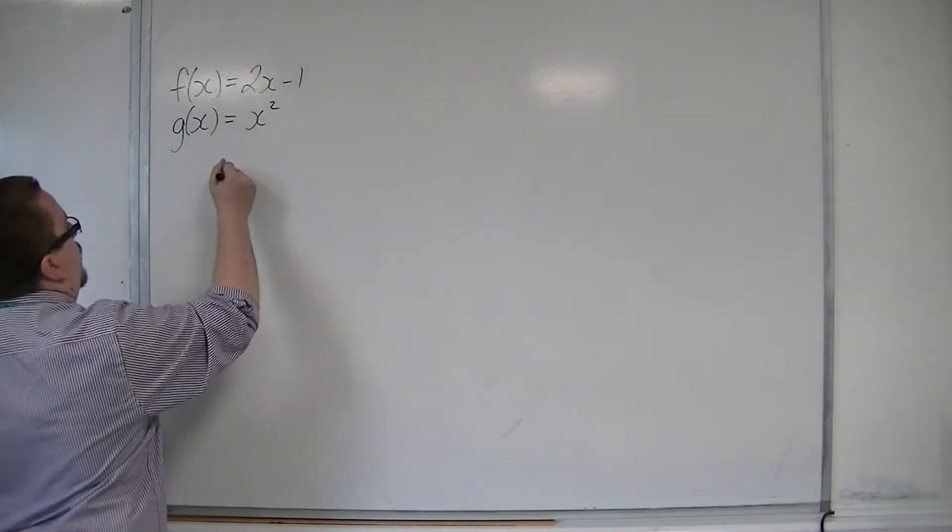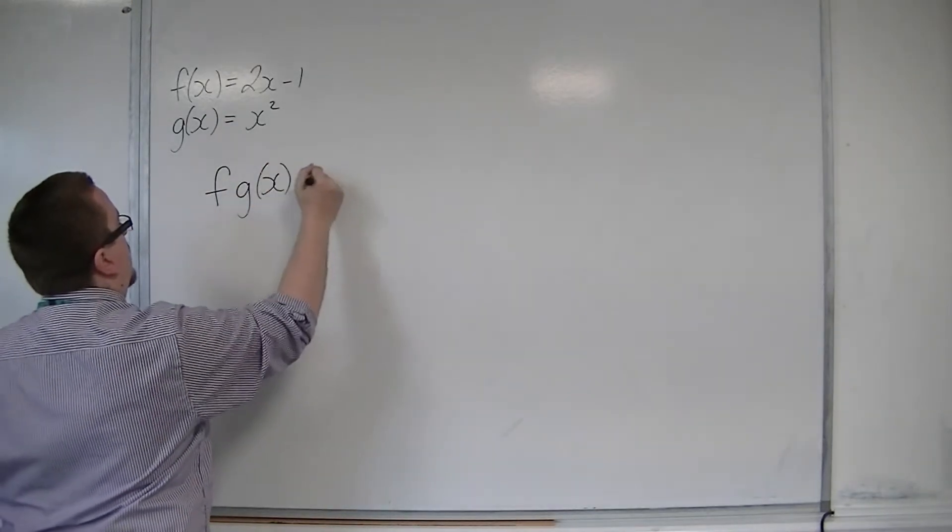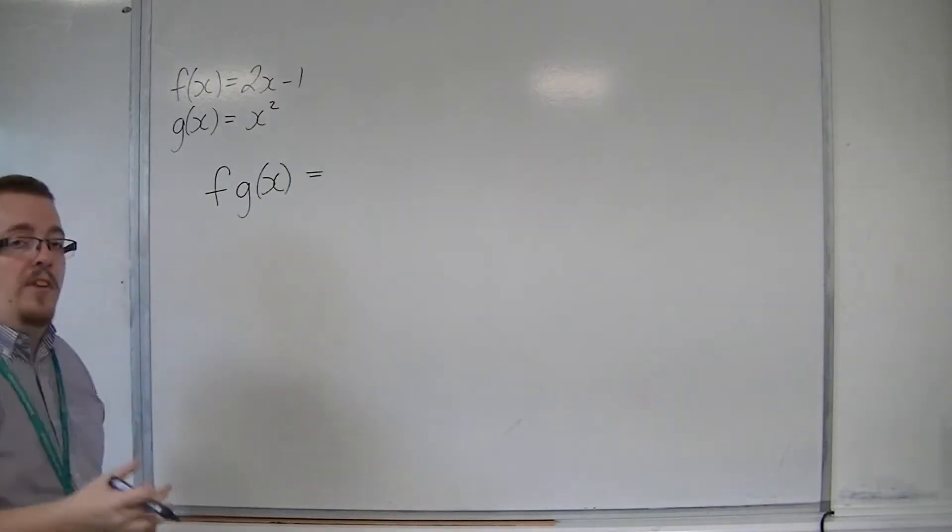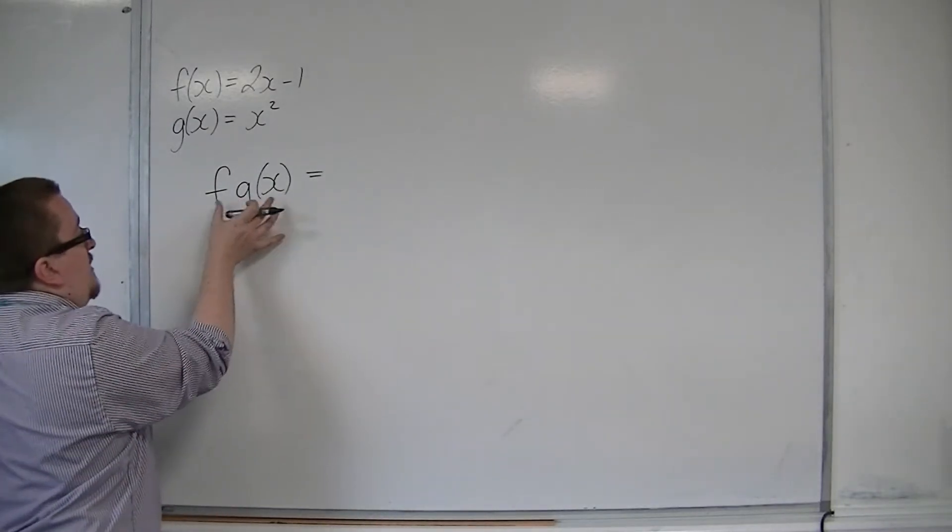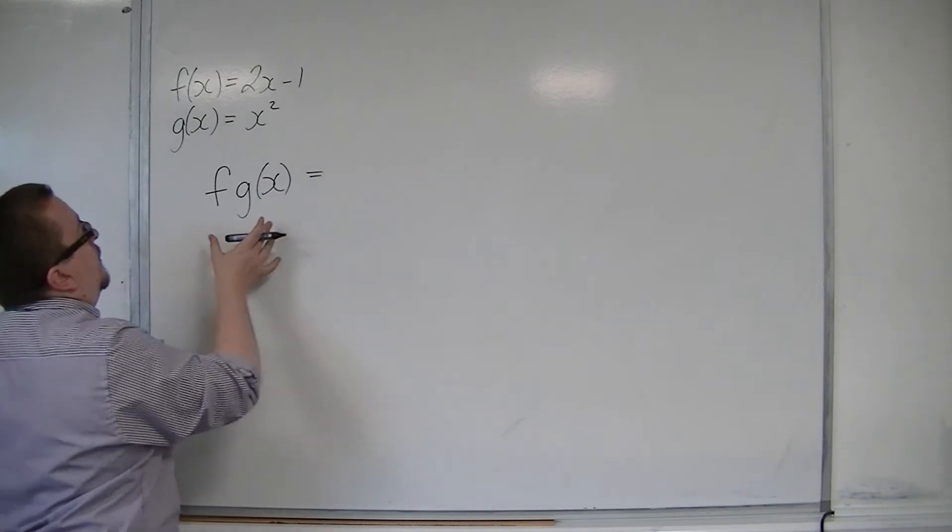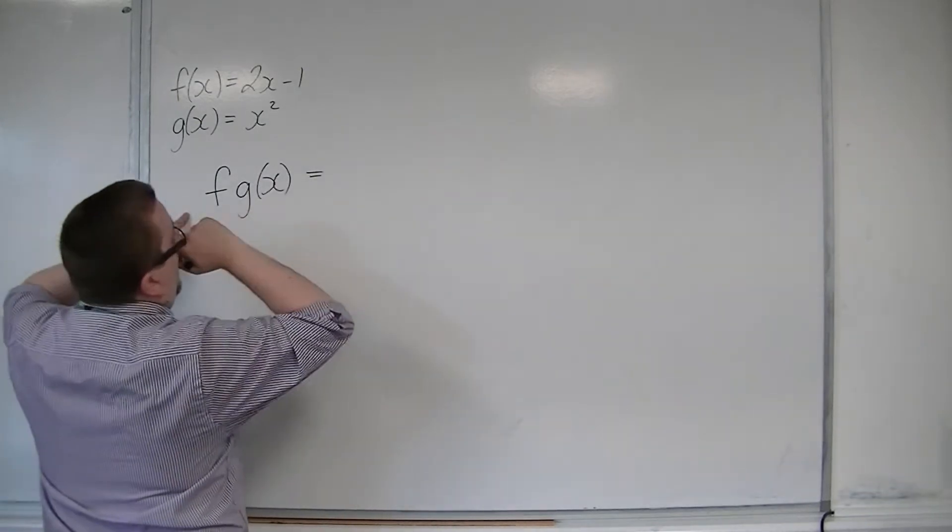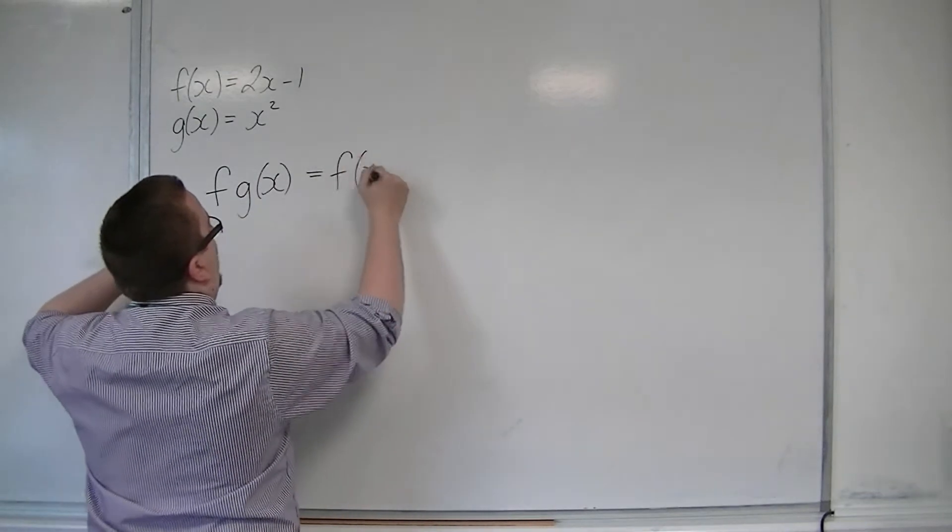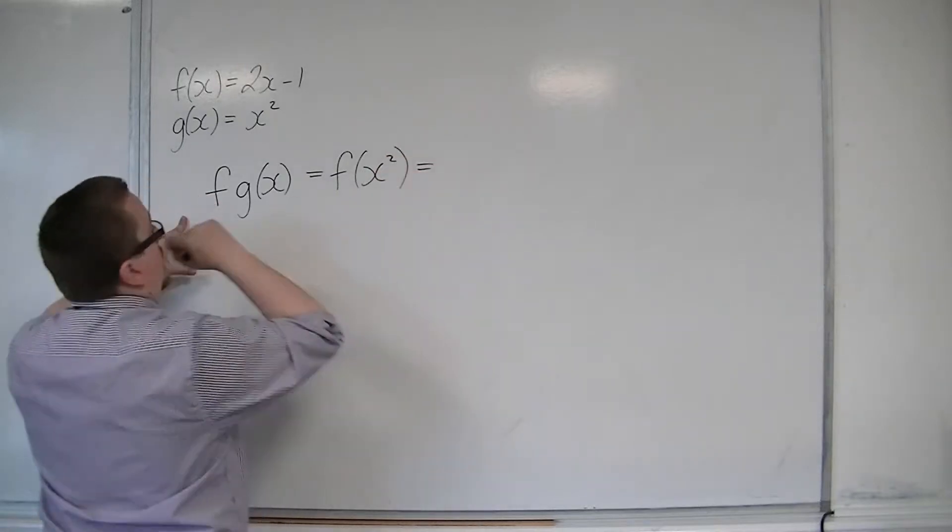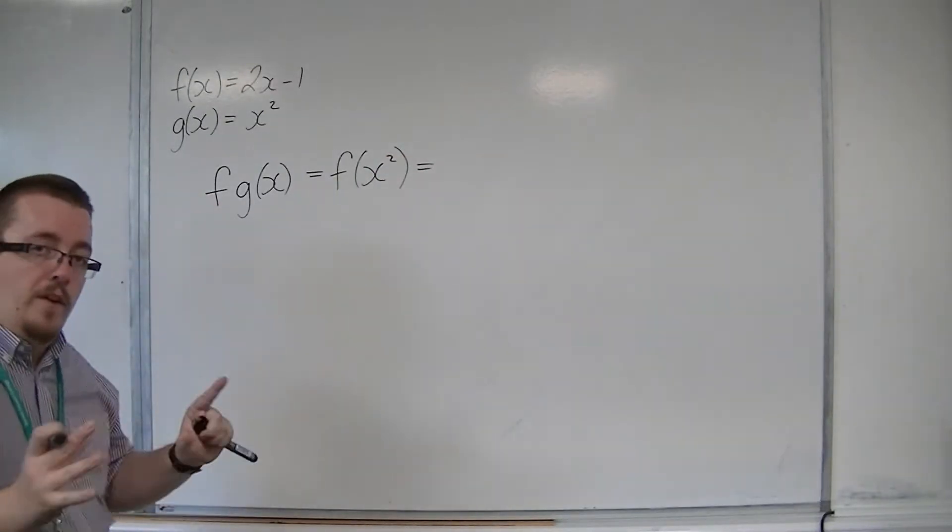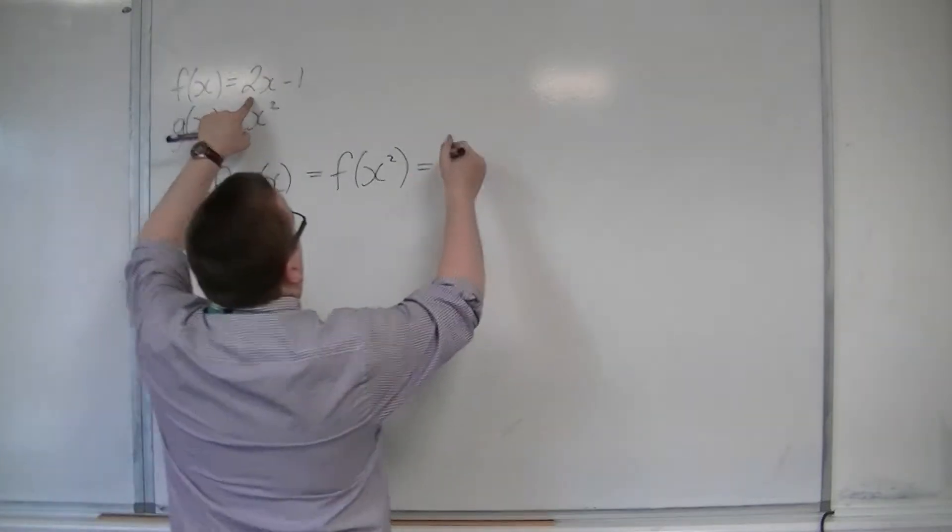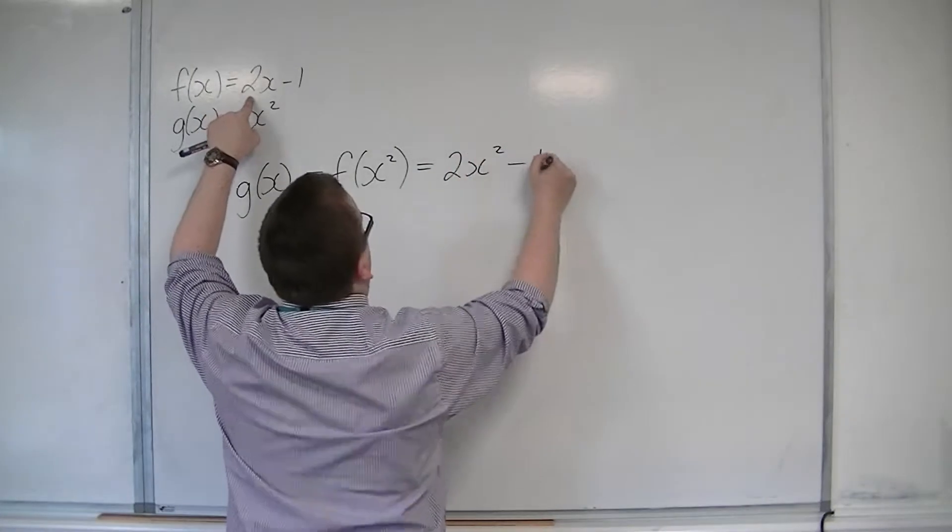If I was looking for f g of x, what this means is that I'm putting g of x into f of x. That means that I want f of x squared. I replace any x that I find in f with x squared, so I get 2x squared minus 1.